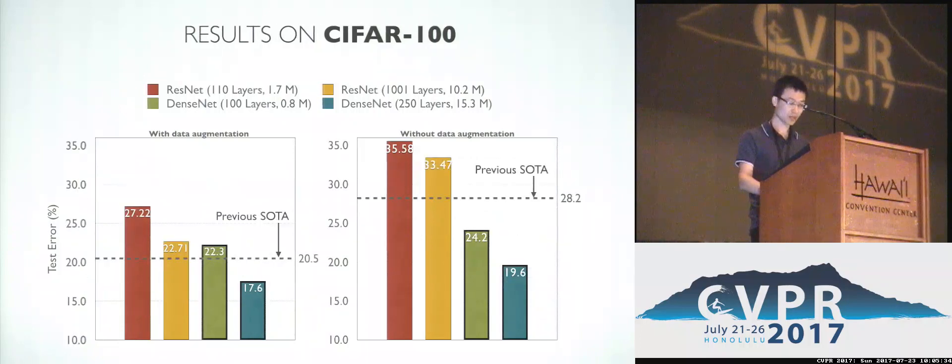On the CIFAR-100 dataset, the trend is quite similar. The small DenseNet is able to get comparable performance as the much larger ResNet, and the larger DenseNet gets state-of-the-art performance.